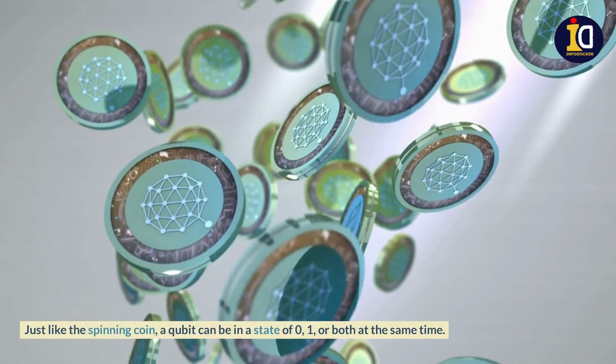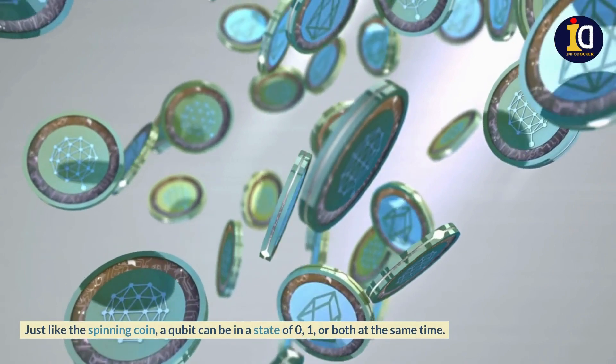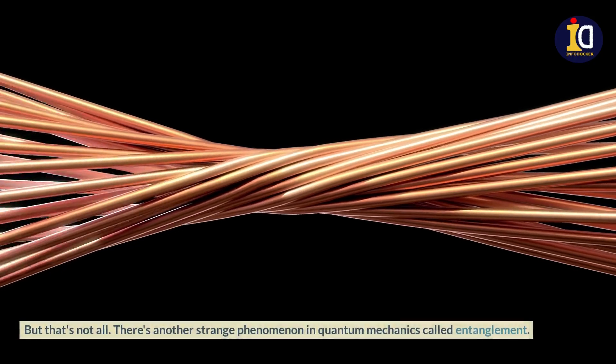Just like the spinning coin, a qubit can be in a state of 0, 1, or both at the same time. But that's not all.